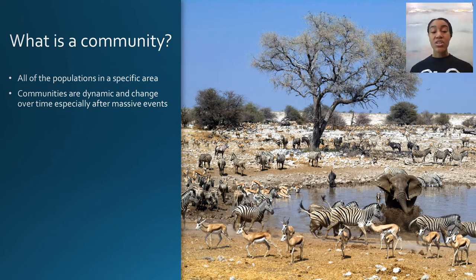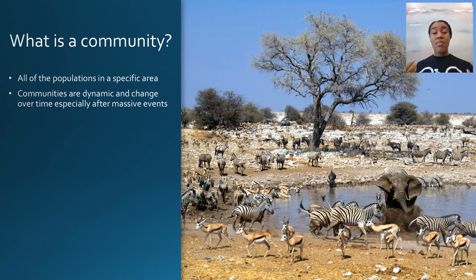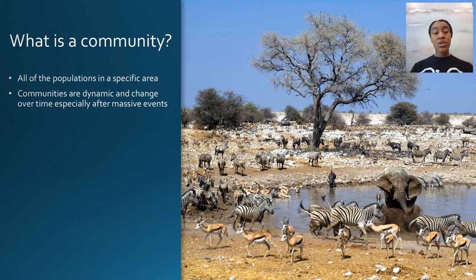This image of a watering hole in Africa shows all the various different animal species interacting in this area — it's a really good picture of a very dynamic community. Communities are dynamic and change over time due to migration, changes in environmental conditions, and especially after massive events like a monsoon, volcano eruption, earthquake, or major storm, which can really change the dynamics within a community.